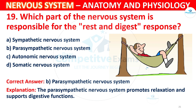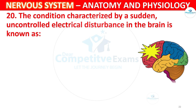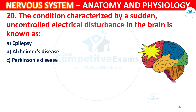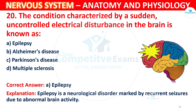Question 20: The condition characterized by sudden, uncontrolled electrical disturbances in the brain is known as what? Options: A) Epilepsy, B) Alzheimer's disease, C) Parkinson's disease, D) Multiple sclerosis. The correct answer is A, Epilepsy. Epilepsy is a neurological disorder marked by recurrent seizures due to abnormal brain activity.